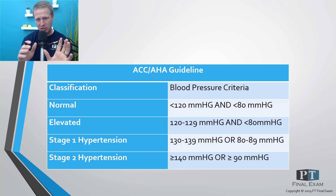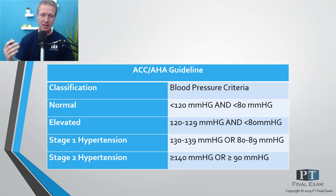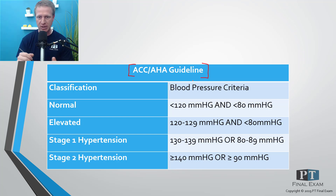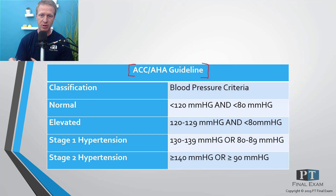Before the changes, there were just three categories: normal, pre-hypertensive, and hypertensive. The American College of Cardiology and the American Heart Association came up with these updated guidelines with the idea to help mitigate and reduce coronary risk — things like coronary artery disease, heart attacks, strokes, and clots — all the different risks associated with high blood pressure.